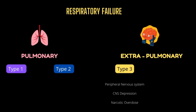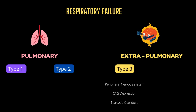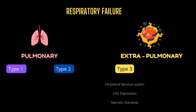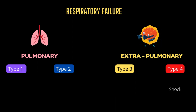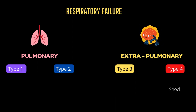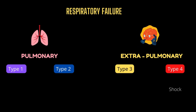Peripheral nervous system disorders include Guillain-Barré syndrome and myasthenia gravis, both causing respiratory muscle and chest wall weakening. In situations of narcotic overdose, the CNS produces suppression of the neurological impulse to breathe, as shown in type 3 respiratory failure. Type 4 respiratory failure, which has the highest fatality rate, is caused by shock — either hypovolemic or septic — which causes a mismatch in perfusion due to diminished blood supply.